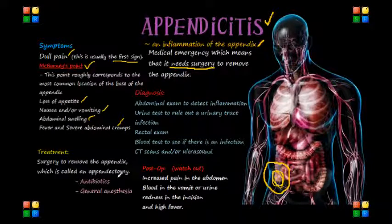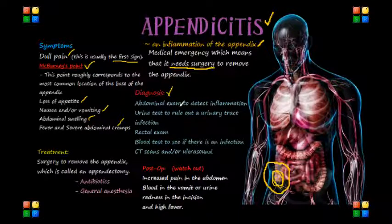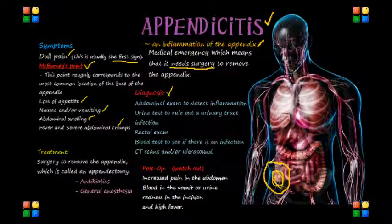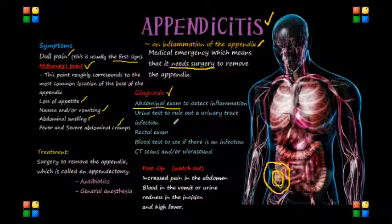How do we diagnose our patients with appendicitis? It can be sometimes tricky because the symptoms of appendicitis are frequently very vague and extremely similar to other problems. Several tests are usually used to help make a better diagnosis, including an abdominal exam to detect the inflammation, a urine test to rule out a UTI or urinary tract infection, a rectal exam, and a blood test to see if there's an infection in the body. A CT scan and/or ultrasound will also be done.